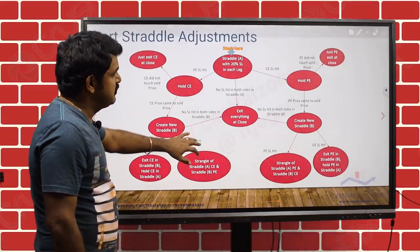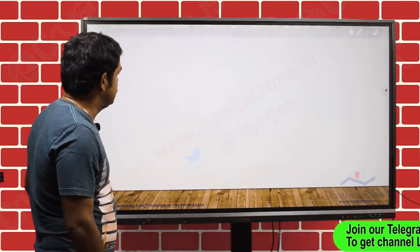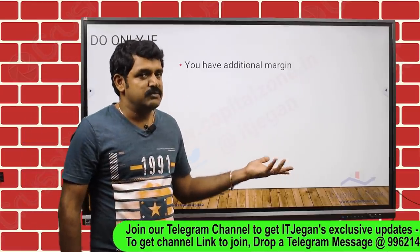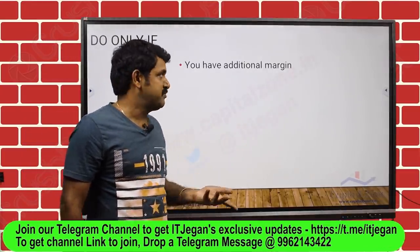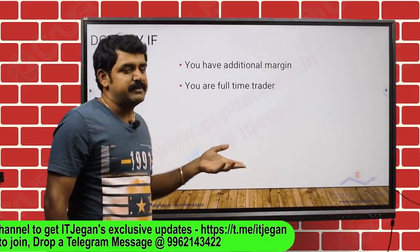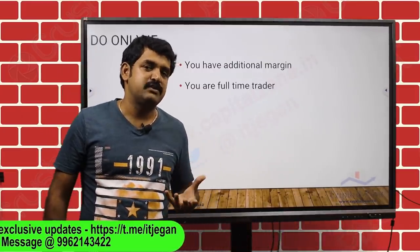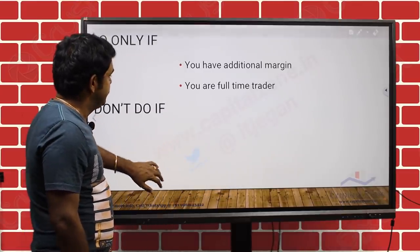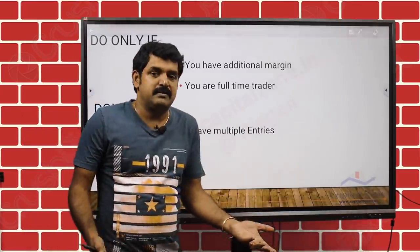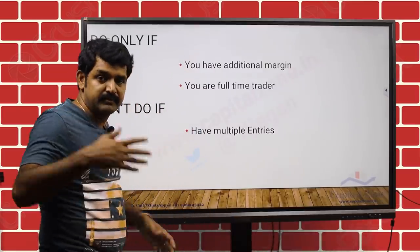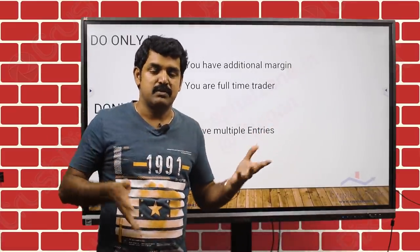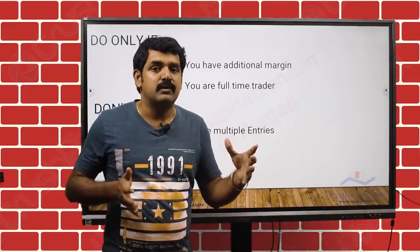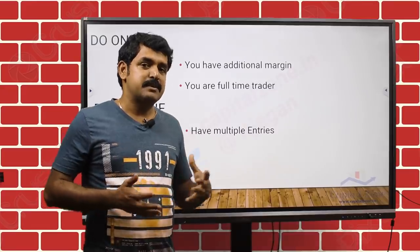Having said that, I don't do much of these adjustments — and I'll tell you the reasons. First, you need to have additional margin, and most of the time I don't have that extra margin. Second, if you are a full-time trader you have to sit in front of the system to execute this when the price triggers. Also, if you have multiple entries, the next entry will take care of all adjustments automatically — mean reversion and everything will be taken care of.